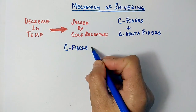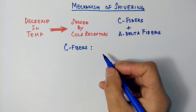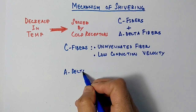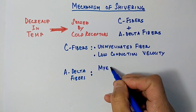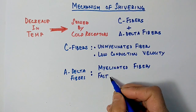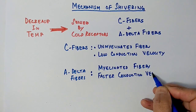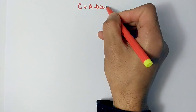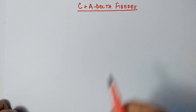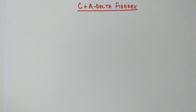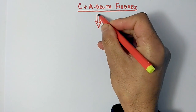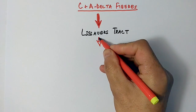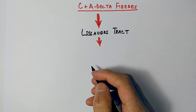C fibers are unmyelinated fibers with low conduction velocity. A-delta fibers are myelinated fibers with faster conduction velocity than C fibers. These C and A-delta fibers sense cold outside the body and transmit a signal to the spinal cord through a tract called the spinothalamic tract.